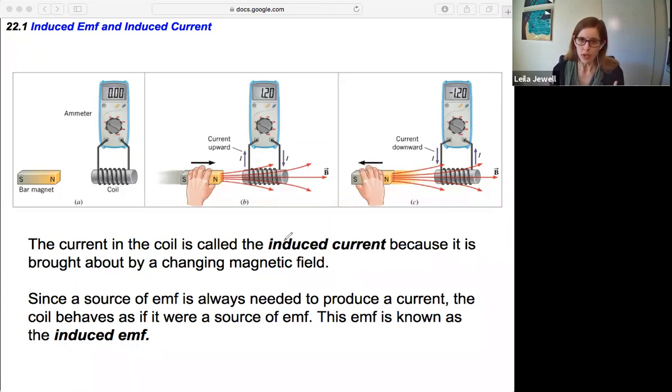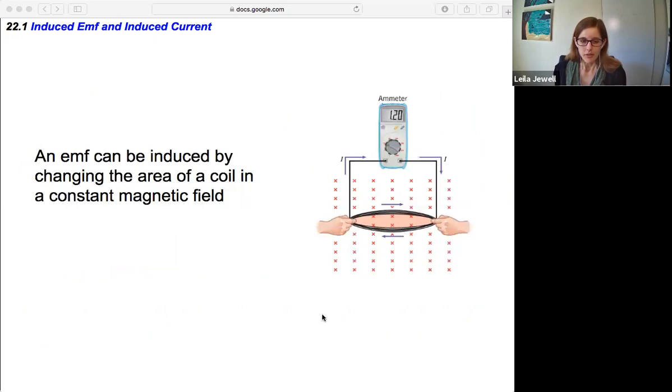This is one way that we can induce a current and an emf in a loop of wire. Another way is if we imagine that we have a loop of wire and we adjust the size of it. This picture is a little hard to see what's going on here, but in one instance the coil is smaller, and then the fingers stretch it to make the coil larger.